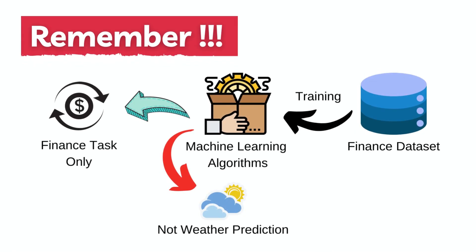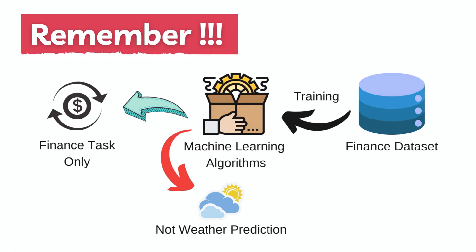Remember, ML algorithms cannot work outside of their domain and data on which they are trained. You cannot expect an ML algorithm to predict weather if you train it on finance data, because all ML algorithms only work on a specific domain task.